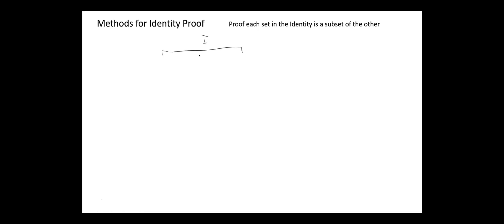We start with the second method: prove each set in the identity is a subset of the other. The general idea is that given an identity with two sets S1 and S2, if we prove that S1 is a subset of S2 and S2 is a subset of S1, then this implies that S1 equals S2.